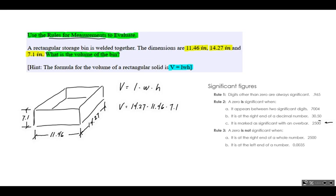Every digit in each number is significant. So this 14.27, that's going to have four significant figures, isn't it? 11.46 also has four. 7.1 only has two, doesn't it? So 7.1 is our least accurate number with two significant figures.